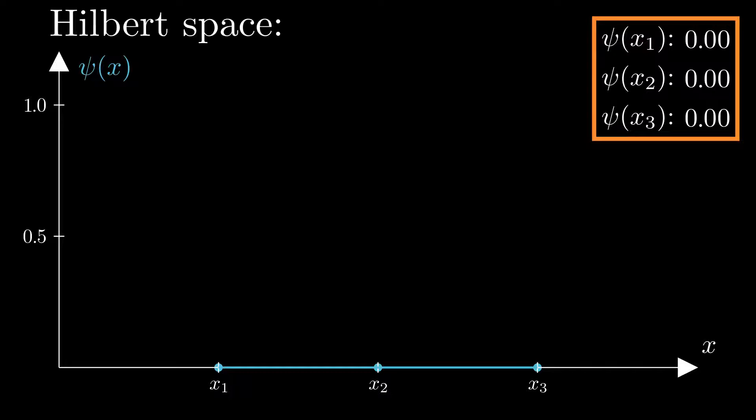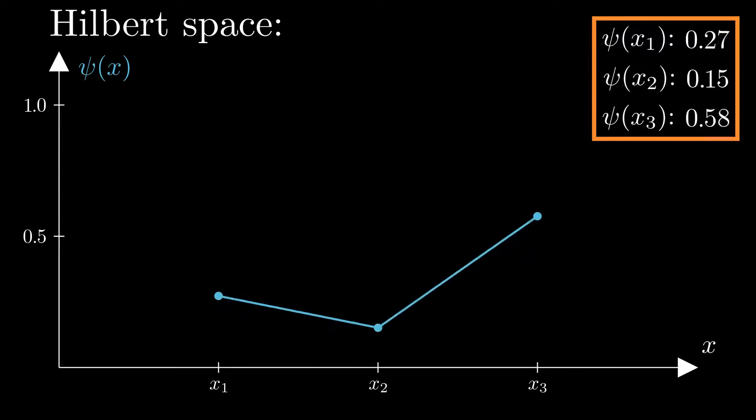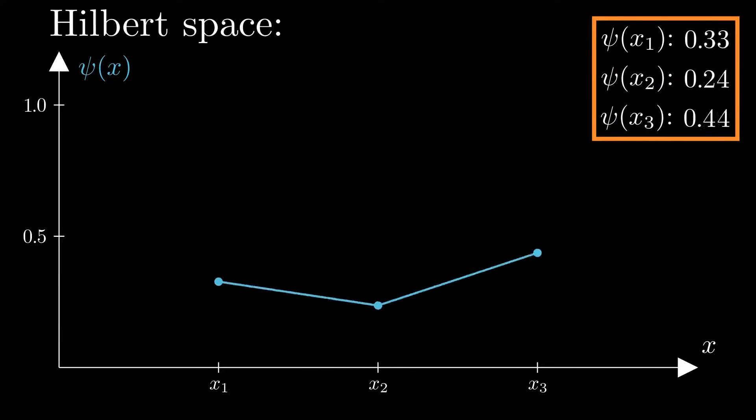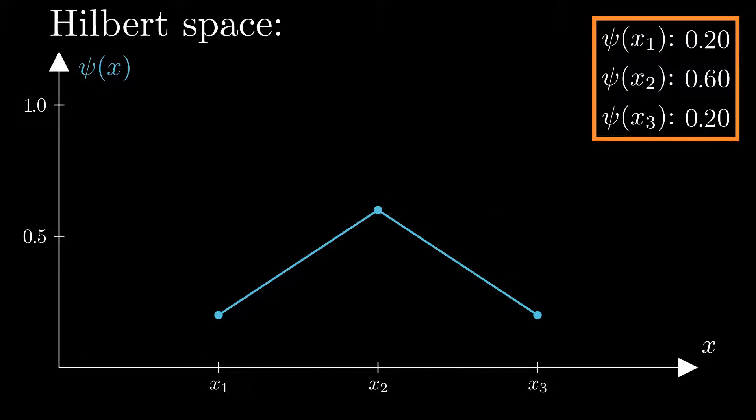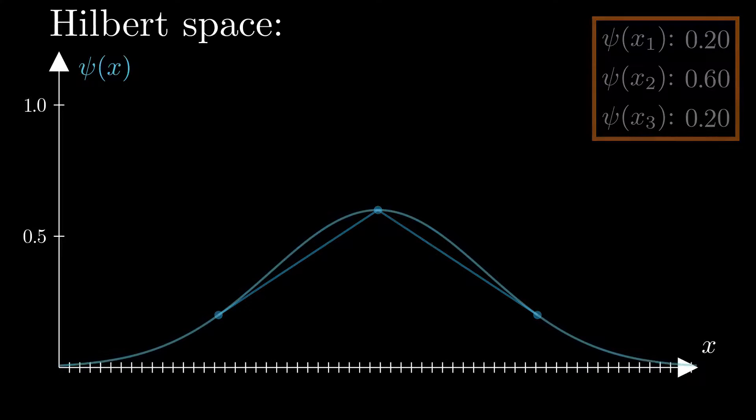A particle has to be somewhere, so we only want the sum of the probabilities of finding the particle at any of the three positions to be exactly one. The total wave function is just the height of each dot in this graph. By taking an infinite amount of points, we indeed obtain the continuous function over all of space again.